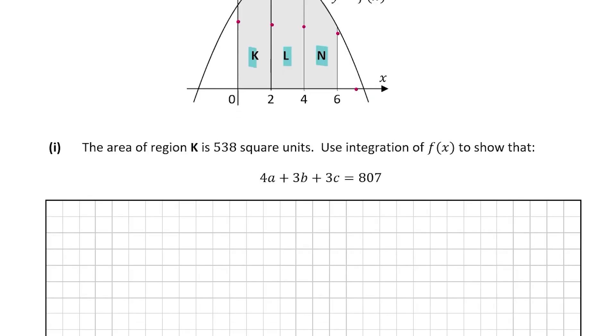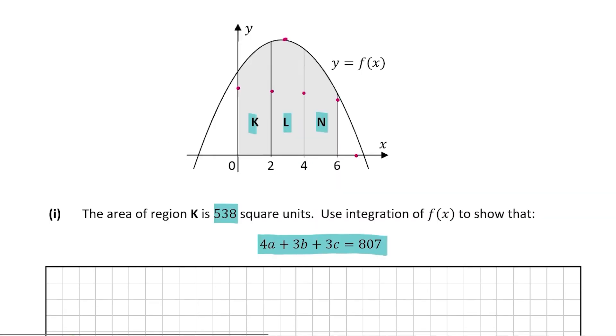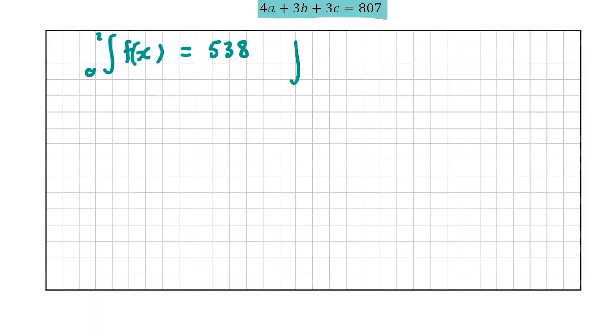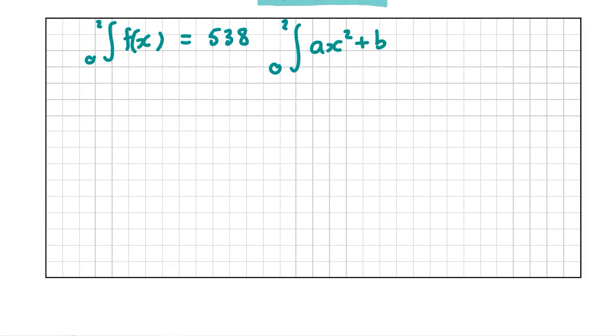We're told that the area of region K is 538 square units, and we're told to use integration of f(x) to show that 4a + 3b + 3c = 807. So if the area of region K is 538 square units, that means that if you integrate f(x) from 0 to 2, because that's where the region K is, it's going to be 538.